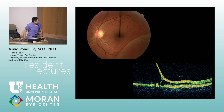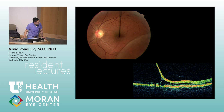Next image — retinoschisis. The schisis is in the outer plexiform layer. Is this degenerative or juvenile retinoschisis? Degenerative — because it's in the outer nuclear layer. Juvenile retinoschisis splits in the nerve fiber layer and is usually located inferotemporally.